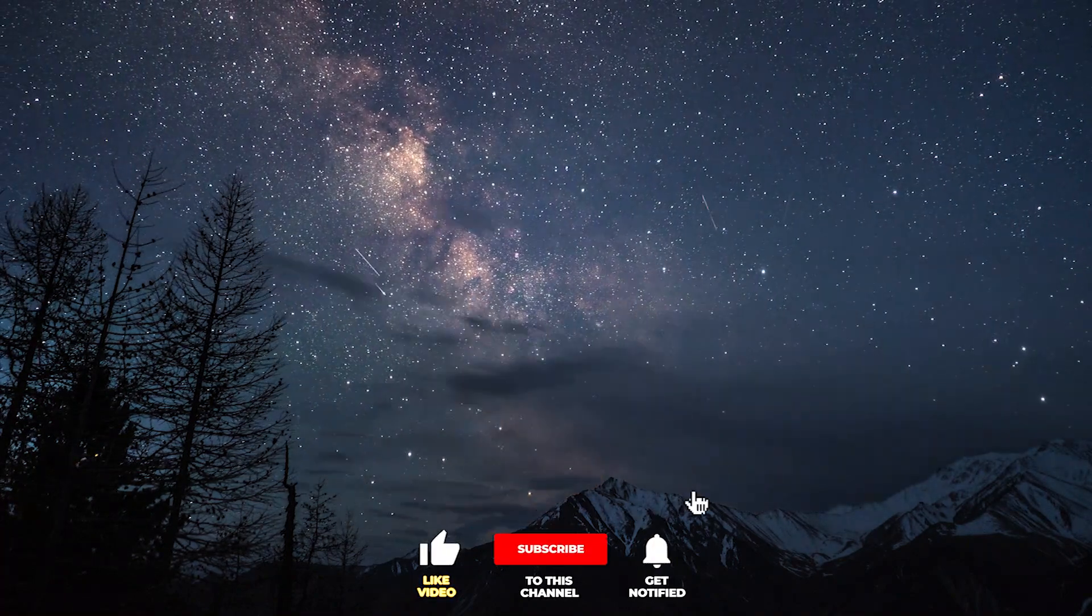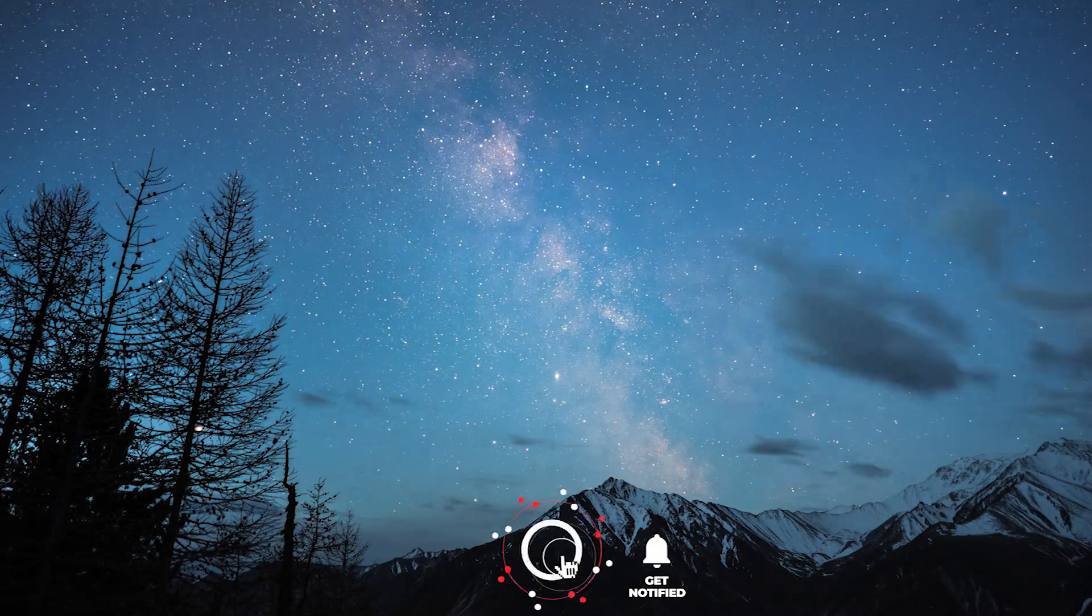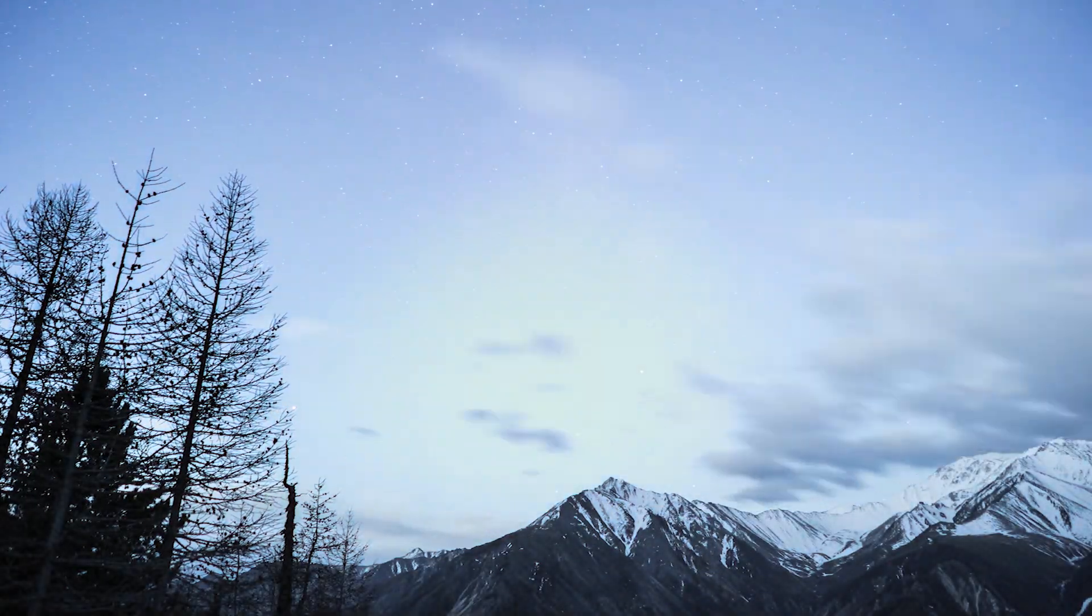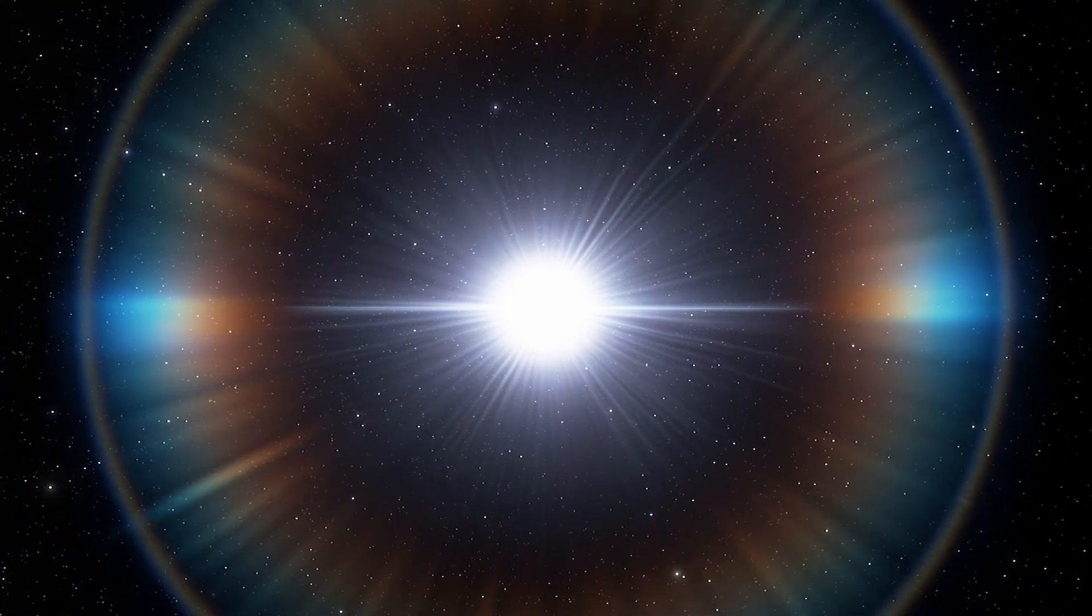This means that billions of white dwarfs in our galaxy have already completed the process and are essentially crystal spheres in the sky. The sun itself will become a crystal white dwarf in about 10 billion years.